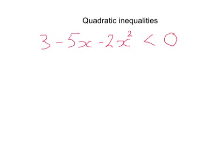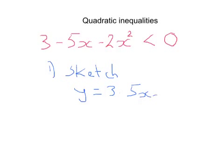Your method that you need to go through is this. First of all, you need to sketch the graph. So we need to sketch this inequality, the whole thing, so this equation, this quadratic, and we're going to set that equal to y. So we're going to sketch y equals 3 minus 5x minus 2x squared.